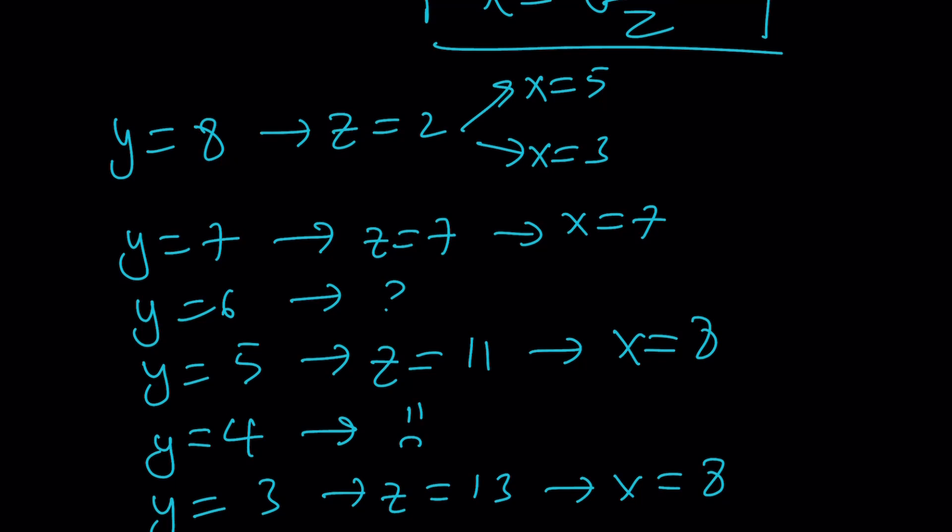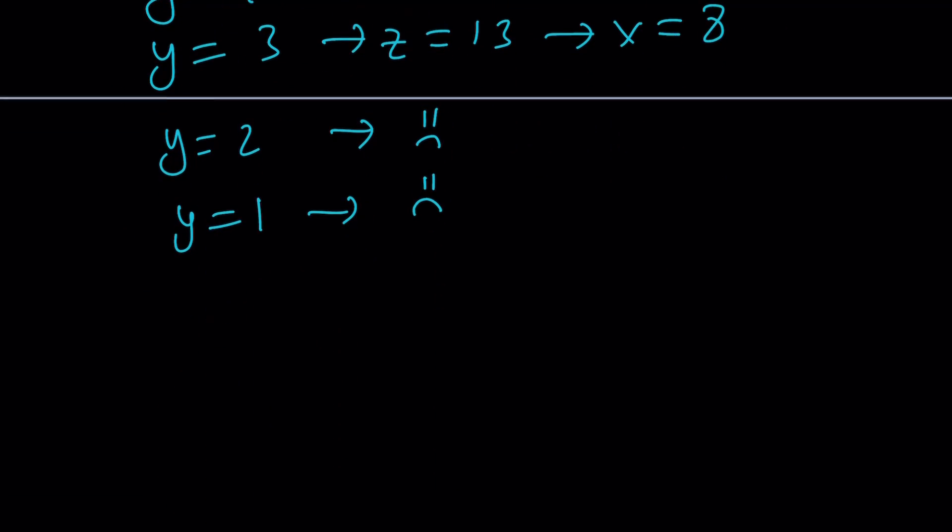So the solution set is made up of 5 comma 8, and by the way that's like an x comma y, 3 comma 8, 7 comma 7, 8 comma 5, and 8 comma 3. So there are 5 solutions. I hope I didn't miss any of them. And this brings us to the end of the video.